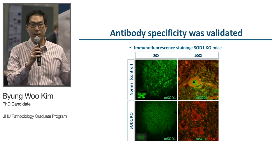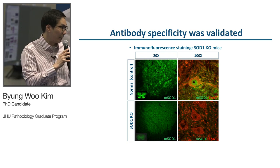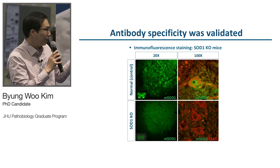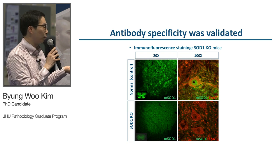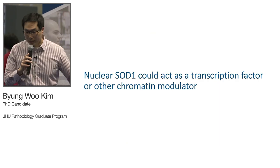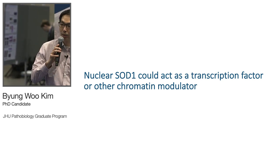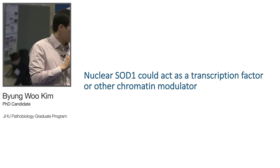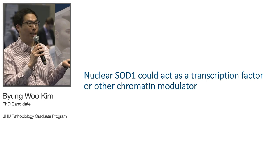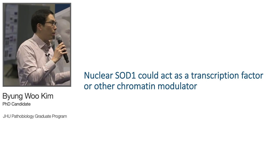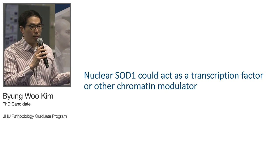The antibody's specificity was validated using SOD1 knockout mice. SOD1 is nicely stained in green in normal control mice, whereas there is no SOD1 signal in SOD1 knockout mice. With this validated antibody, the bottom line is SOD1 is in the nucleus and it also binds chromatin. We wanted to move forward and know what exactly this protein does inside the nucleus, and we hypothesized that nuclear SOD1 could act as a transcription factor or other type of chromatin modulator.